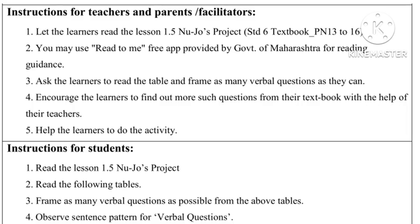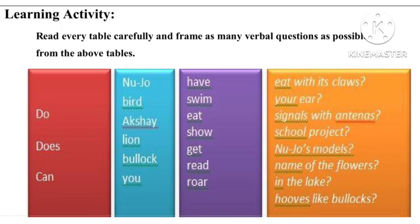Let us jump to the next part of the activity — the learning activity. Read every table carefully and frame as many verbal questions as possible from the above tables. You have been given four tables. In the first table, there are the words do, does, and can. In the second table: Nujo, bird, Akshay, lion, bullock, and you.